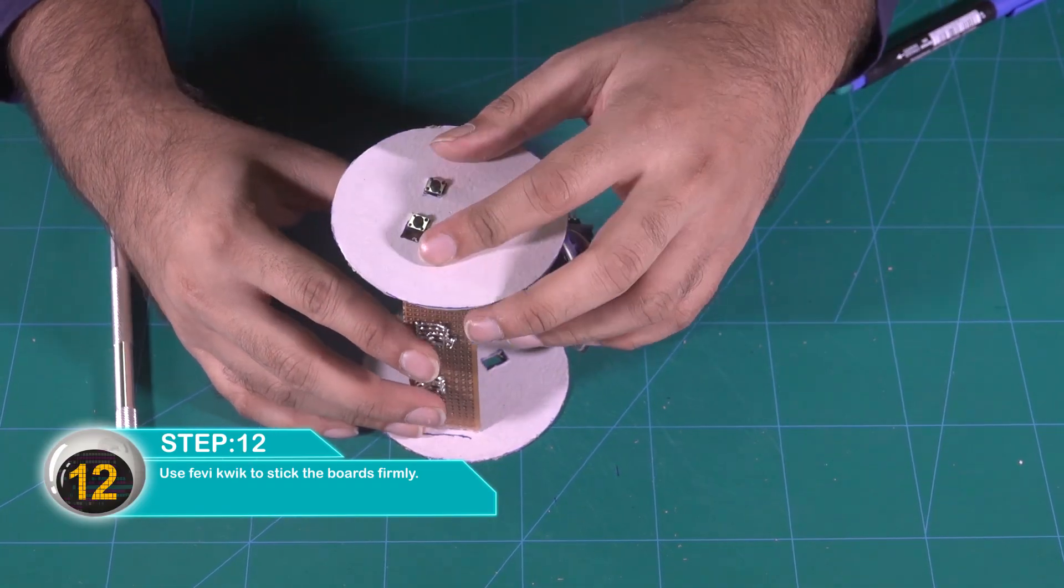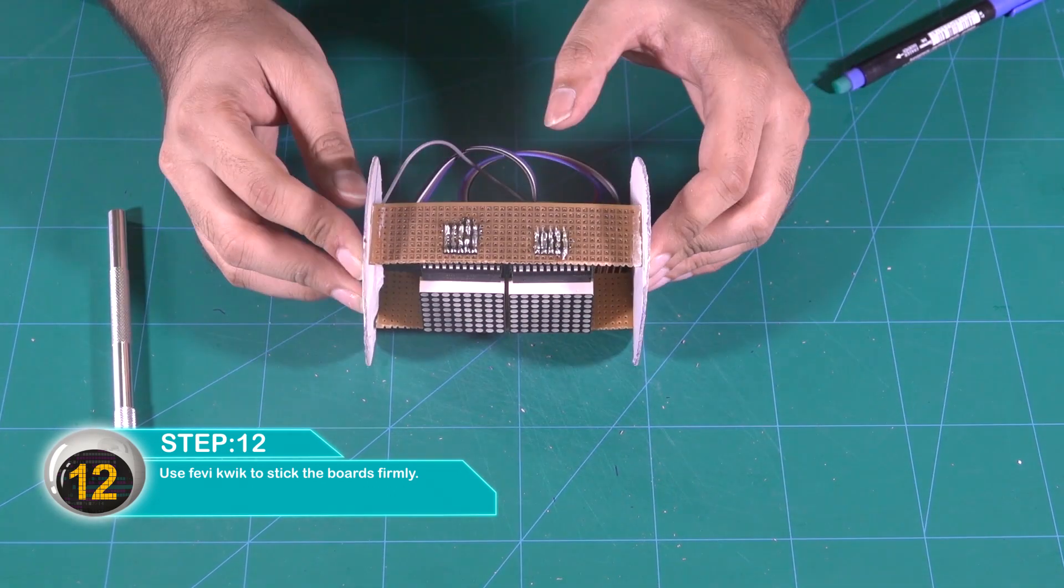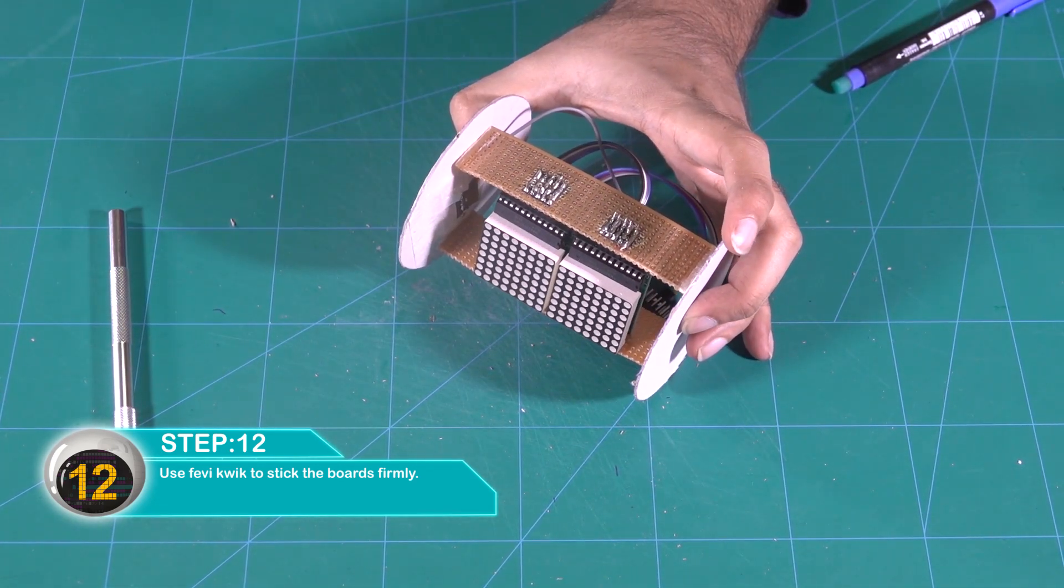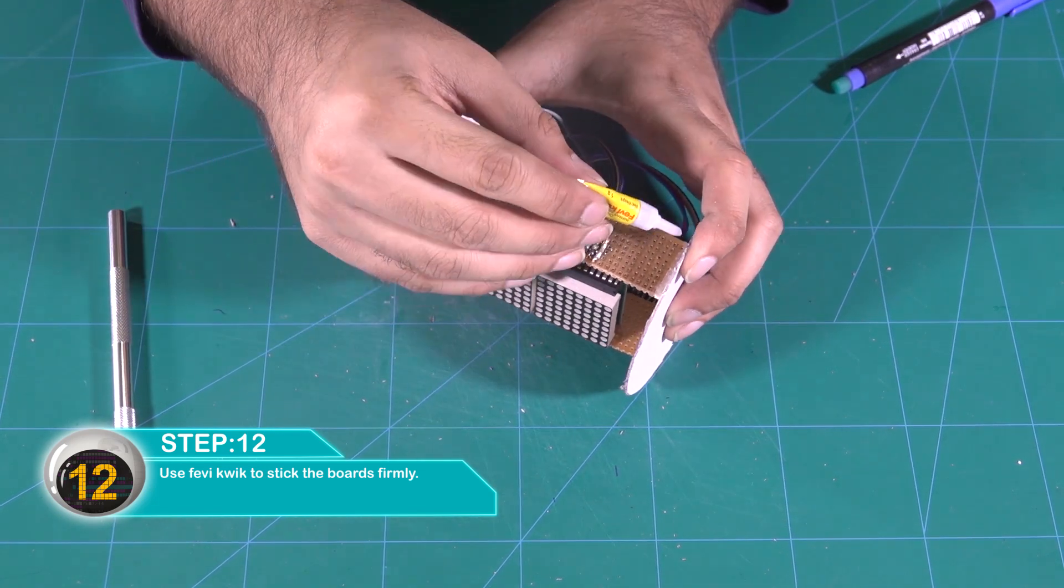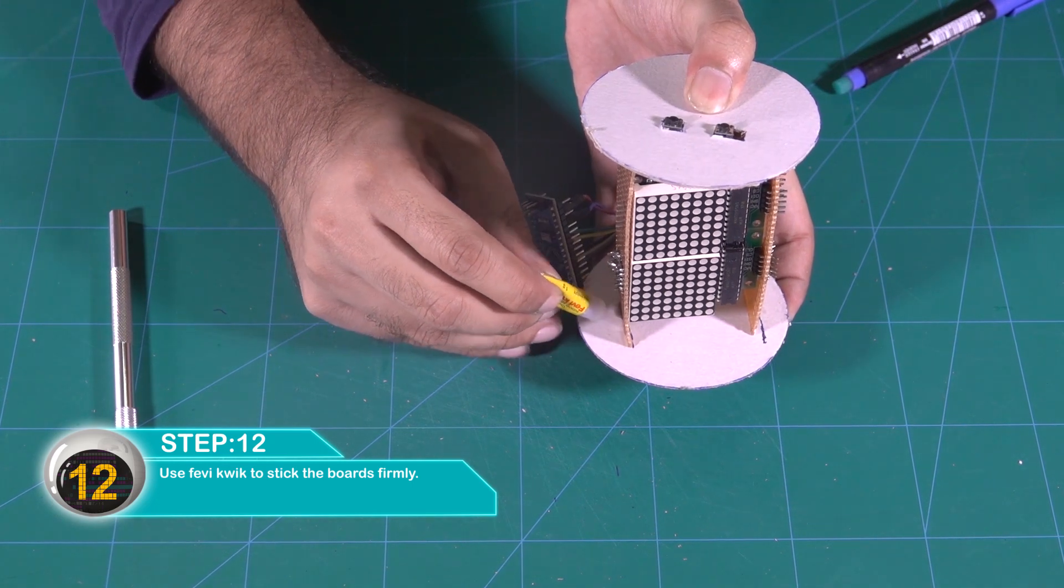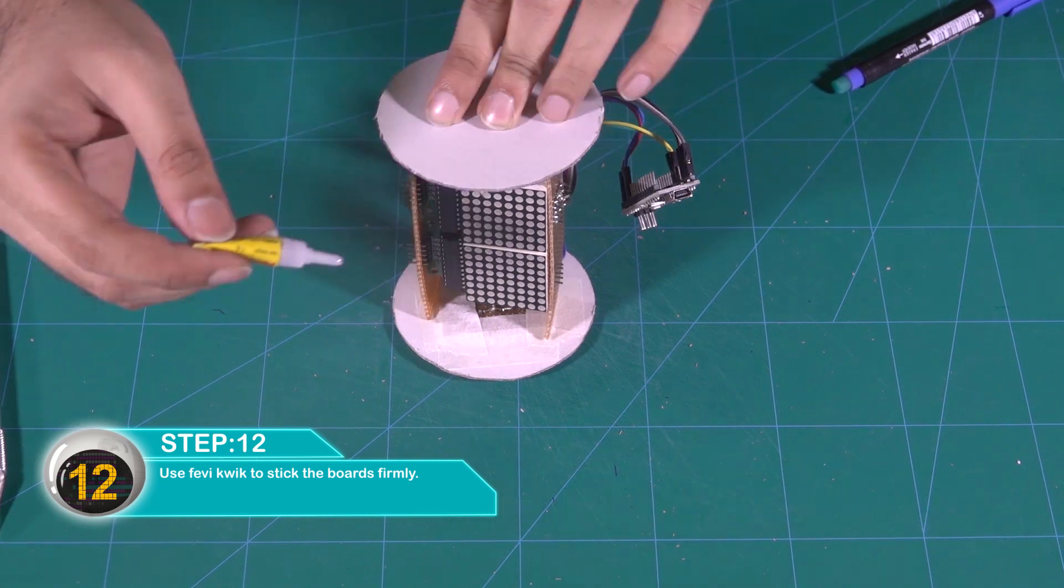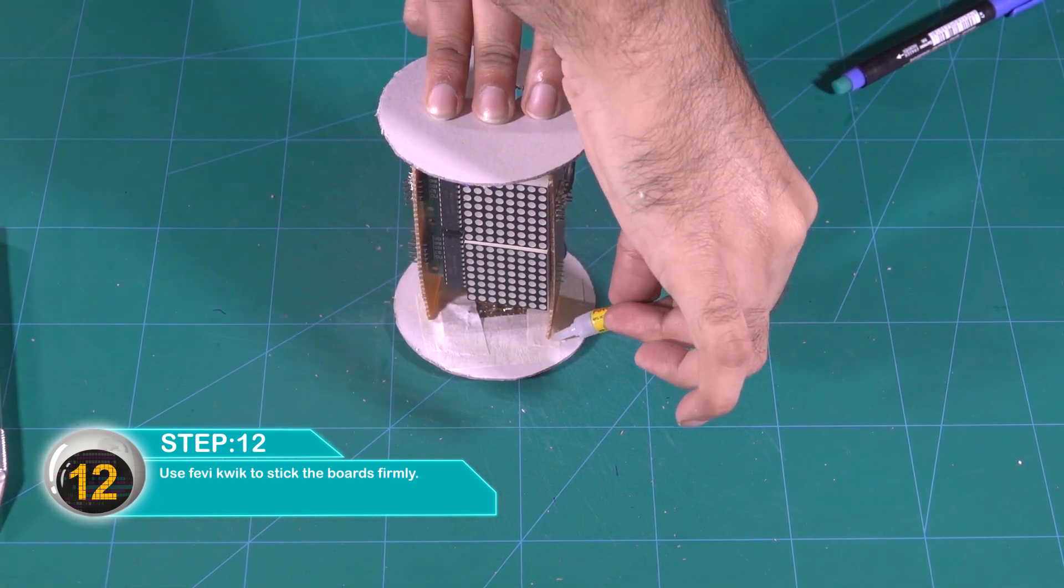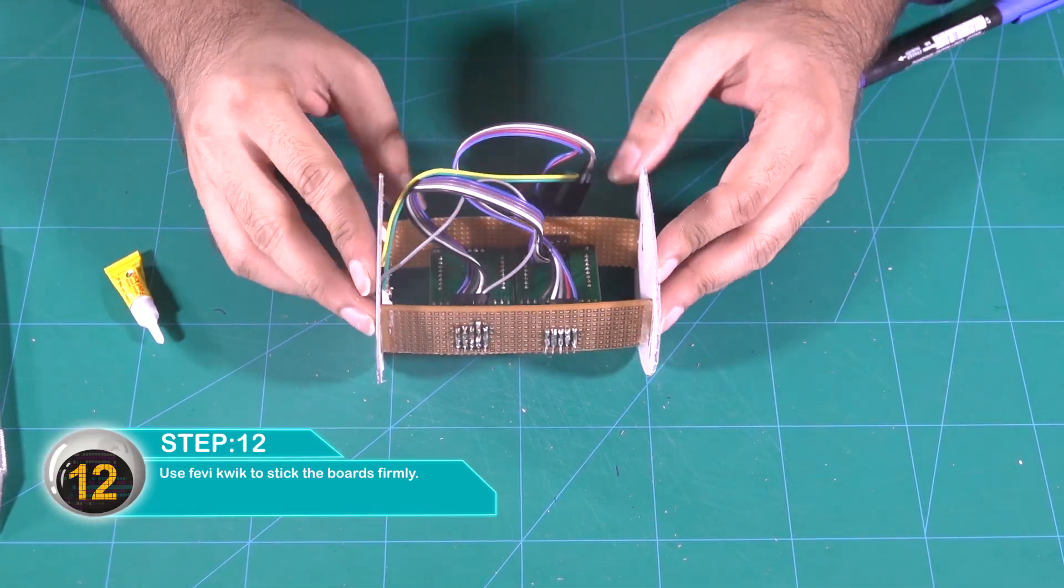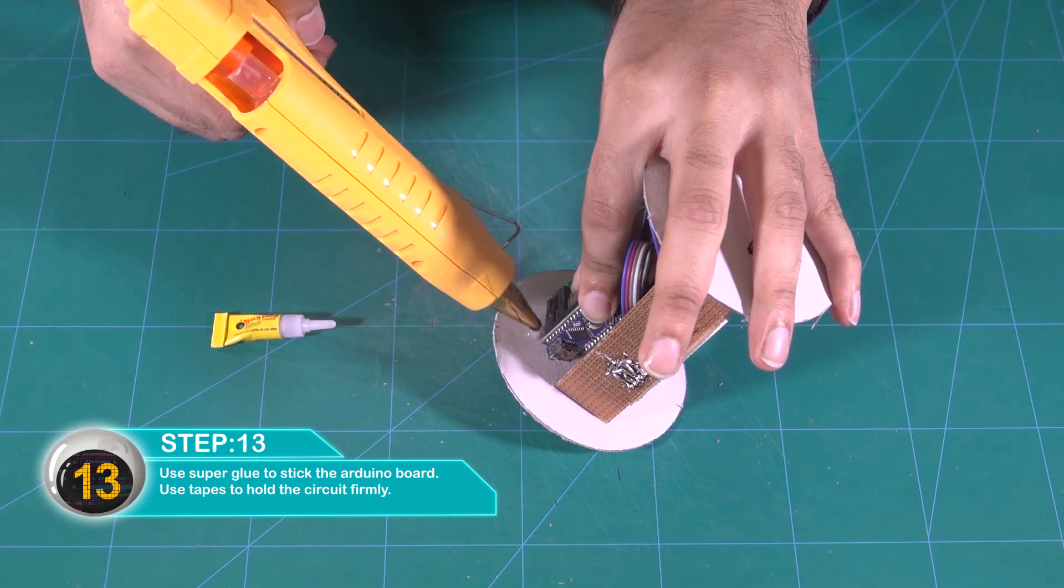Use Feviquik with the boards and cardboard to put them together in a good way. Always be careful when using super glue and Feviquik. Use super glue to stick the Arduino board and use tapes to hold the circuit firmly.